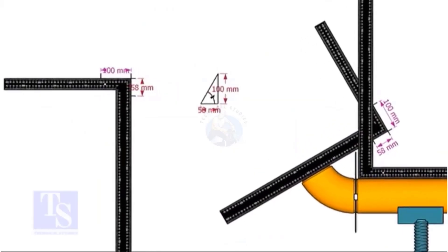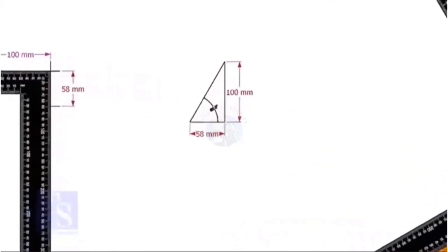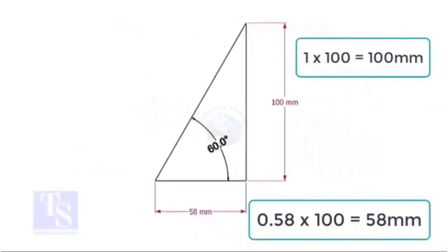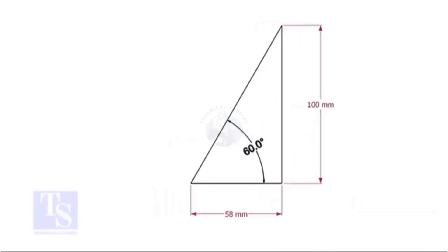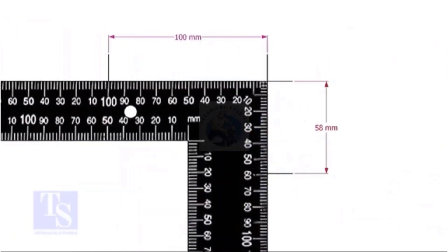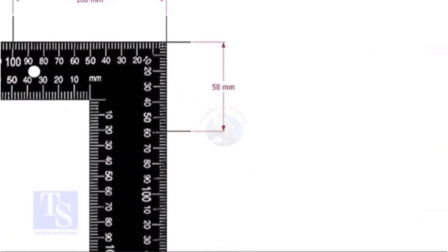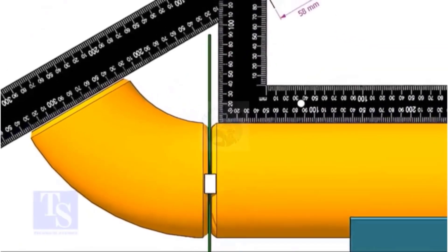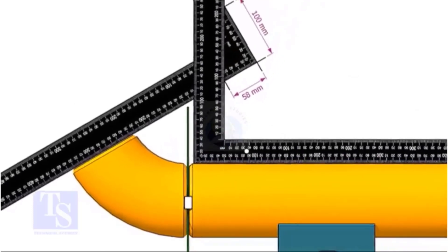For a 60 degrees elbow, the set to run ratio is 1.732 to 1. Mark the set and run dimensions on the right angle and follow the previous steps.